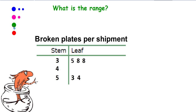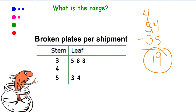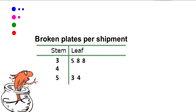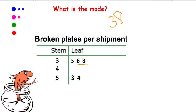Find the range. Pause the video. The range of this set of data is taking the biggest number, which is 54, and subtracting the smallest number, which is 35. Don't forget to borrow. The range is 19. The mode is the number that's listed the most, and we can see that the mode in this set of data is 38.